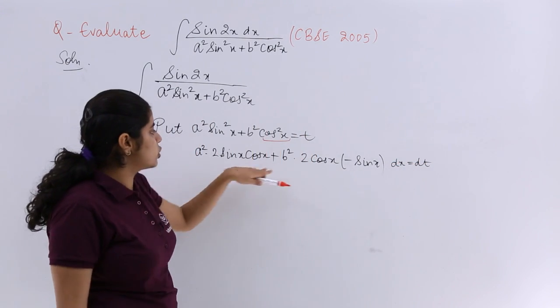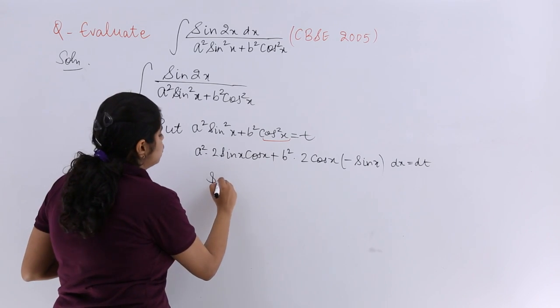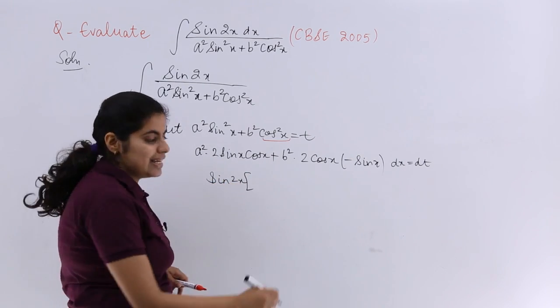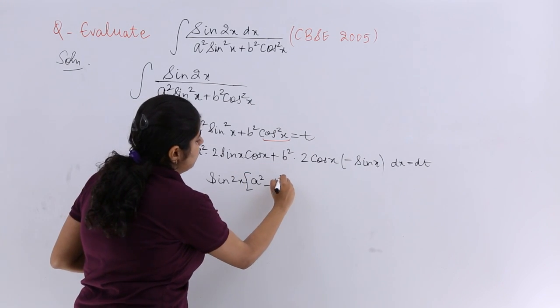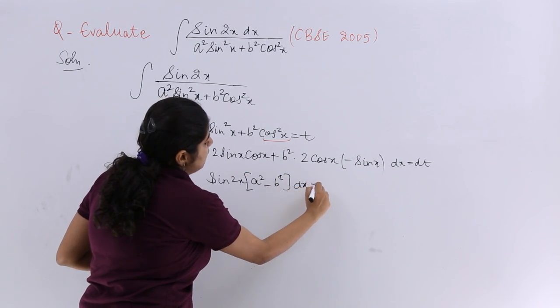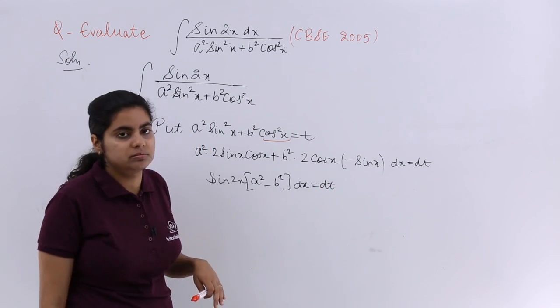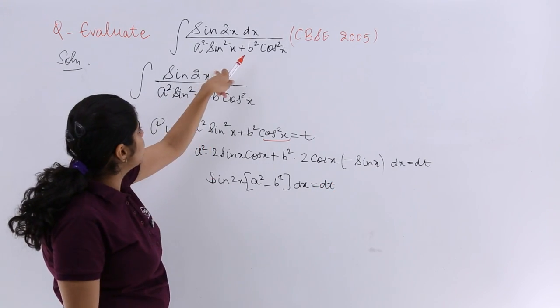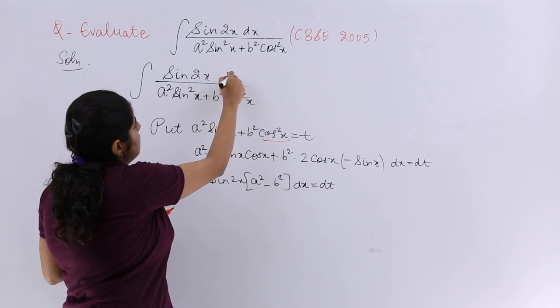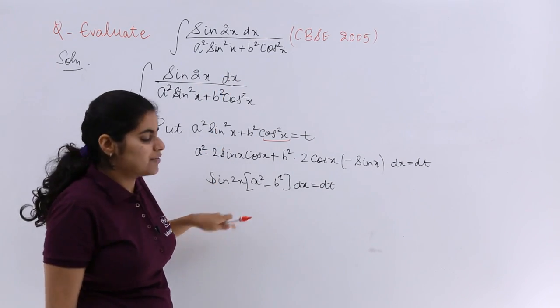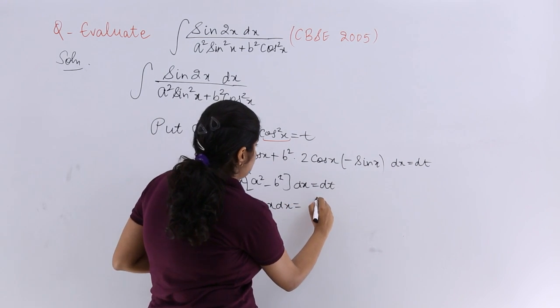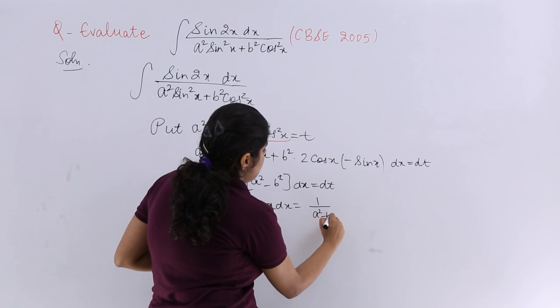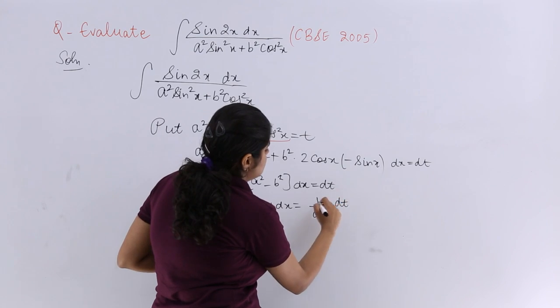And dx is equal to dt. So it is 2 sin x cos x, 2 sin x cos x, which is sin 2x. Let me take it as common. This is a², very fine. Then minus b² is there. And here it is dx, here it is dt. So we have sin 2x in the numerator. Here it was dx by the way. And here also we have sin 2x. Let me take out the value of sin 2x dx. It is nothing but 1/(a² - b²) dt.